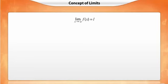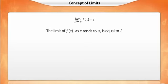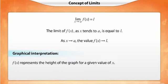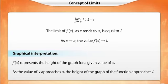Look at the equation shown. As per the equation, the limit of F of X as X tends to A is equal to L. F of X represents the height of the graph for a given value of X. Hence, we can interpret the limit L as the height that the graph of the function approaches as the value of X approaches A.